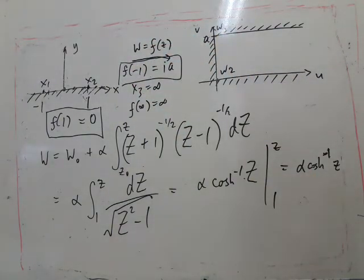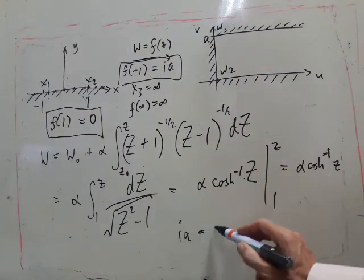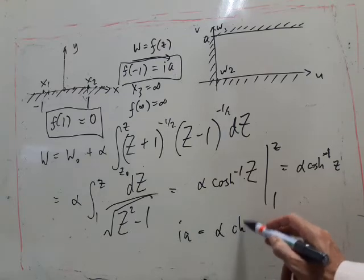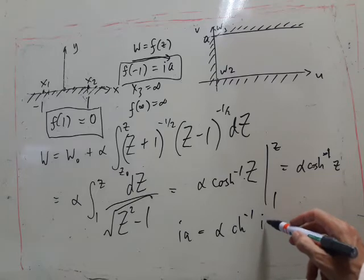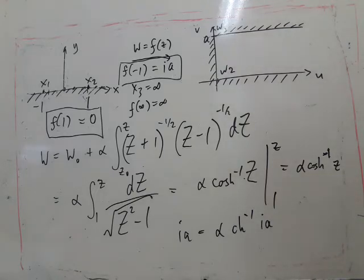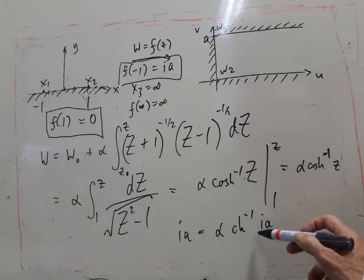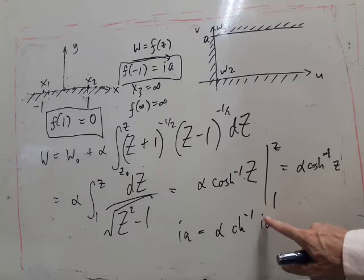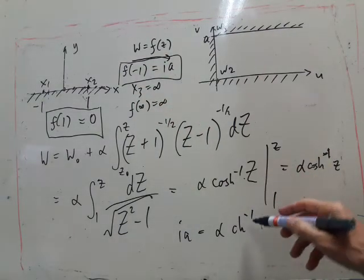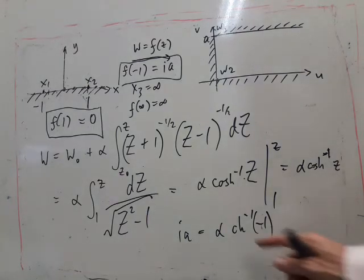So we know that ia is equal to alpha inverse cosh of minus one. To deal with that, instead we can take - we can rearrange and get cosh of ia over alpha is equal to minus one.